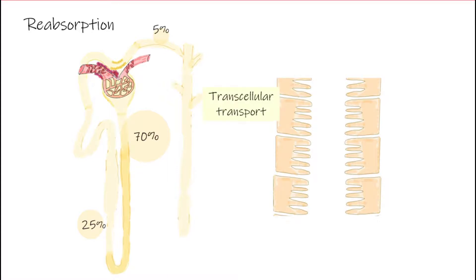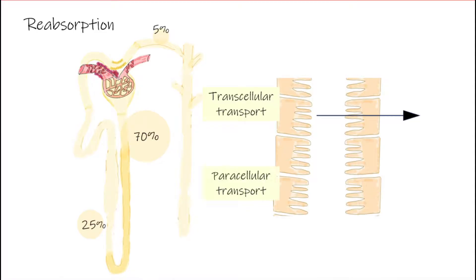The first is what we call transcellular transport, meaning that material is going to go through the cell — crossing the apical membrane, which faces the tubular lumen, as well as across the basolateral membrane into the interstitial space, where it's subsequently taken away by the peritubular capillaries. The other type is paracellular transport, where material moves between the cells rather than through them.